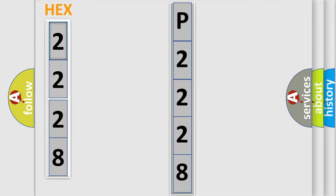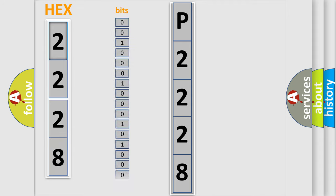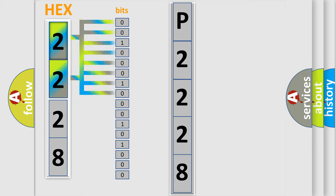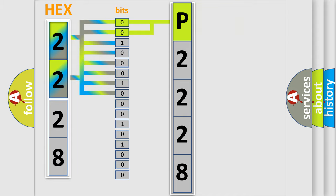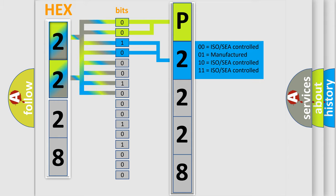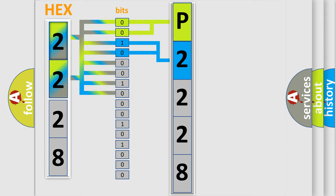The error code is split into two bytes consisting of 16 bits. One bit is the basic unit that each computer works with. The bit has two logical states: zero, low level, and one, high level. By combining the first two bits, the basic character of the error code is expressed. The next two bits determine the second character. The last bits of the first byte define the third character of the code.